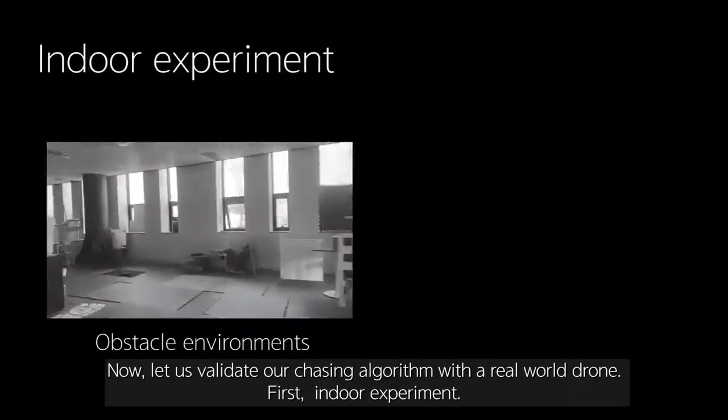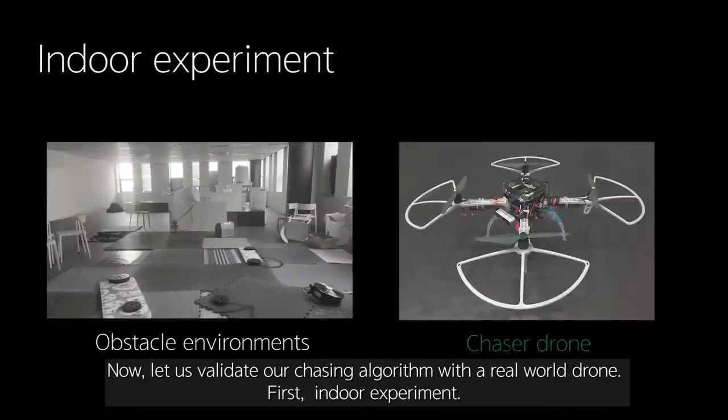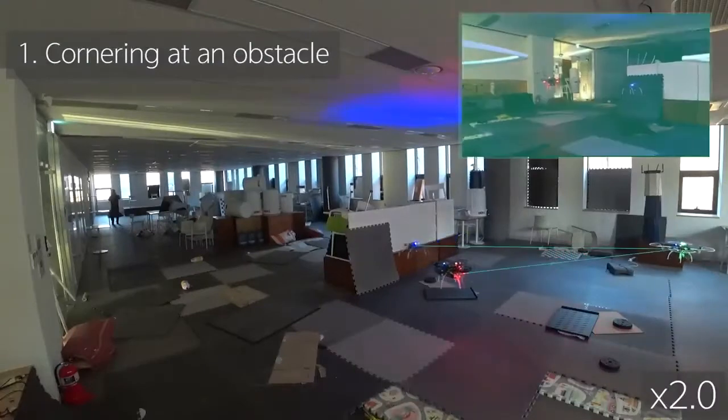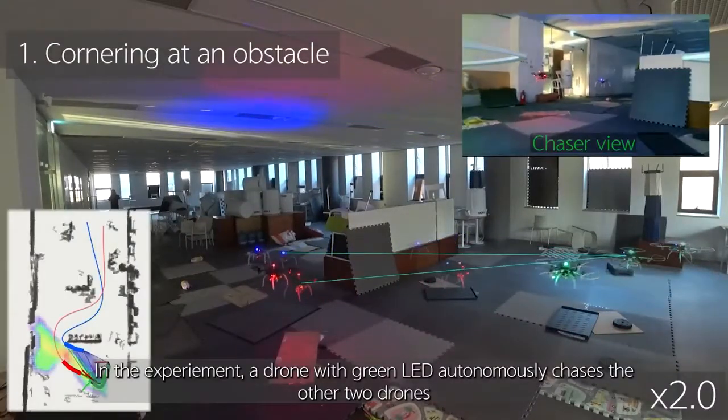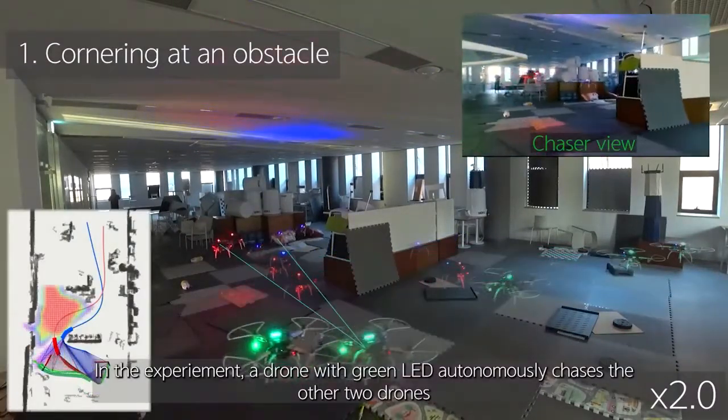Now, let us validate our chasing algorithm with a real-world drone. First, indoor environment. In the experiment, a drone with green LED autonomously chases the other two drones.